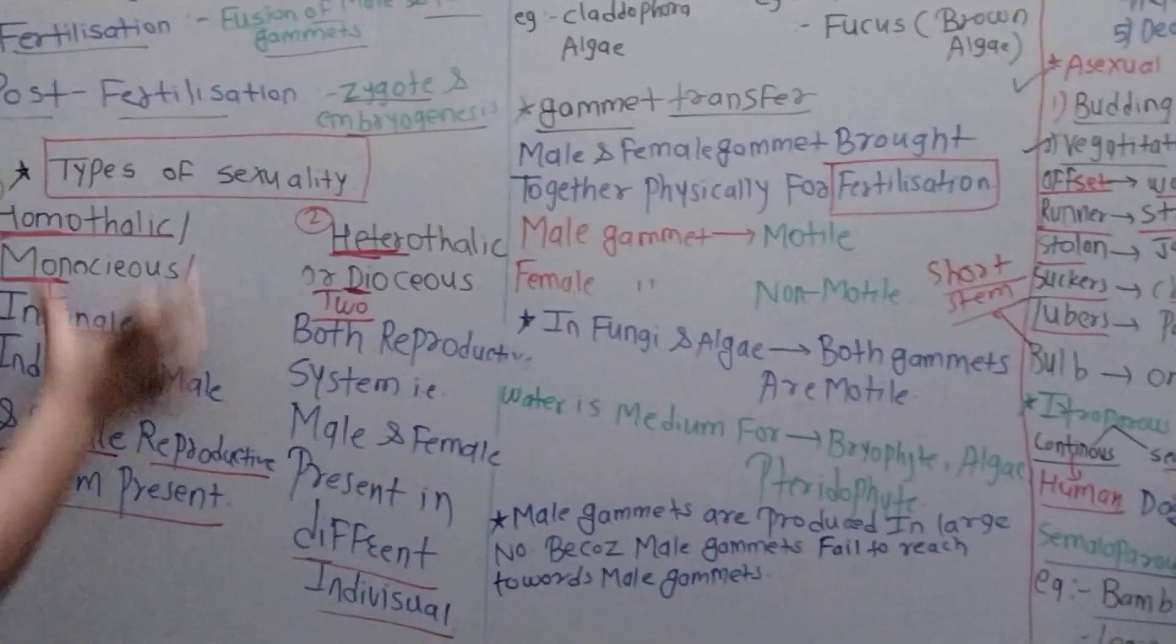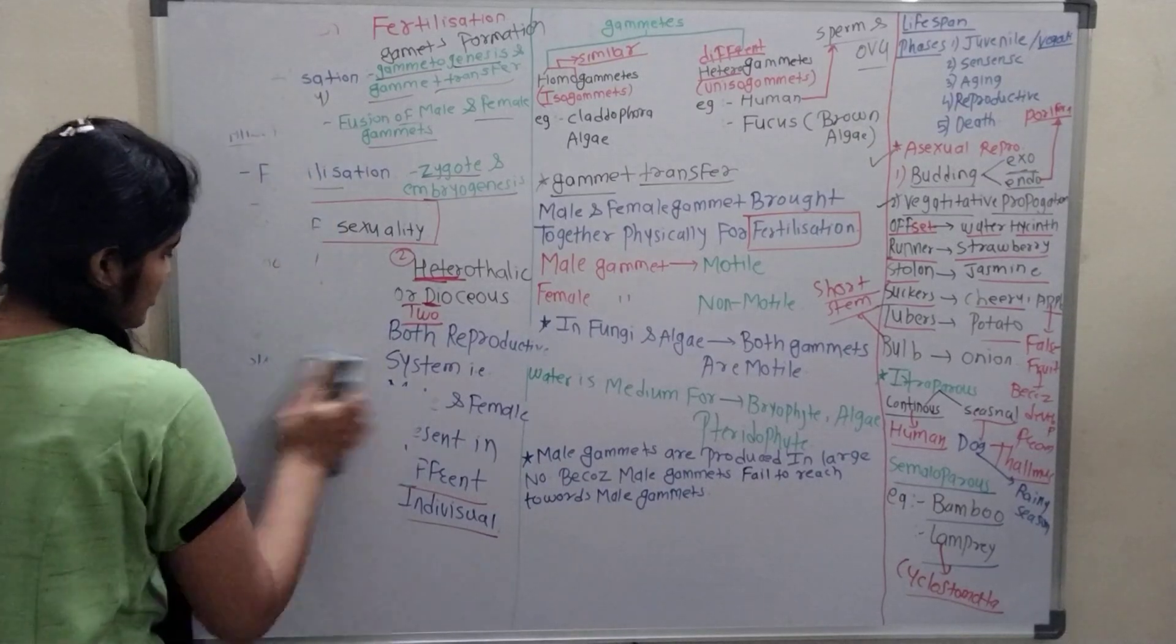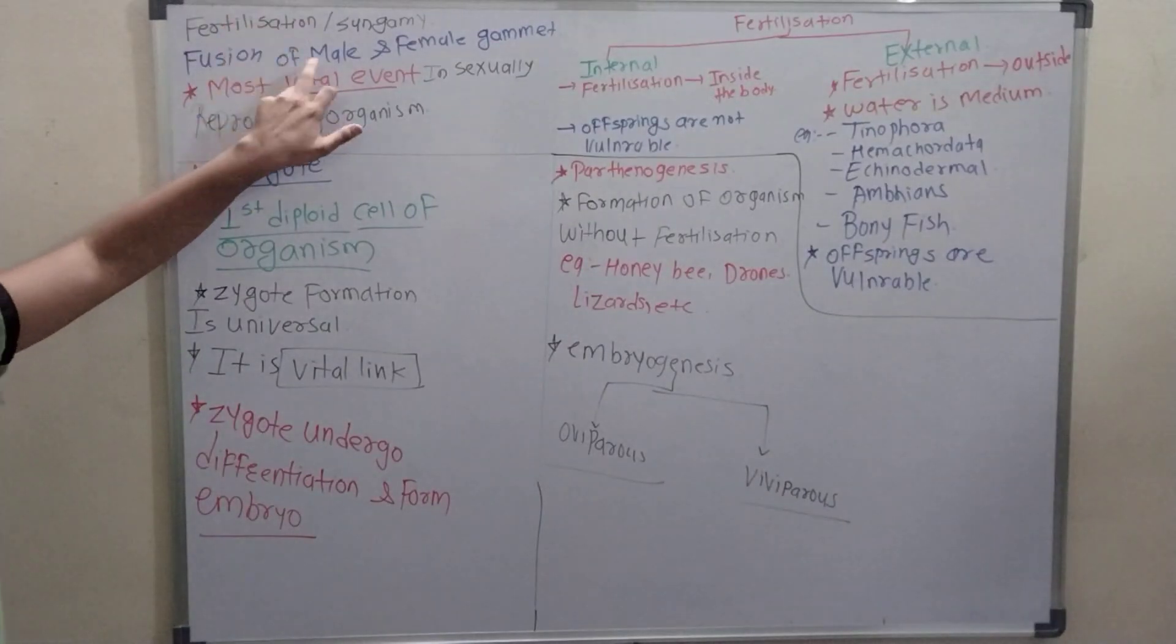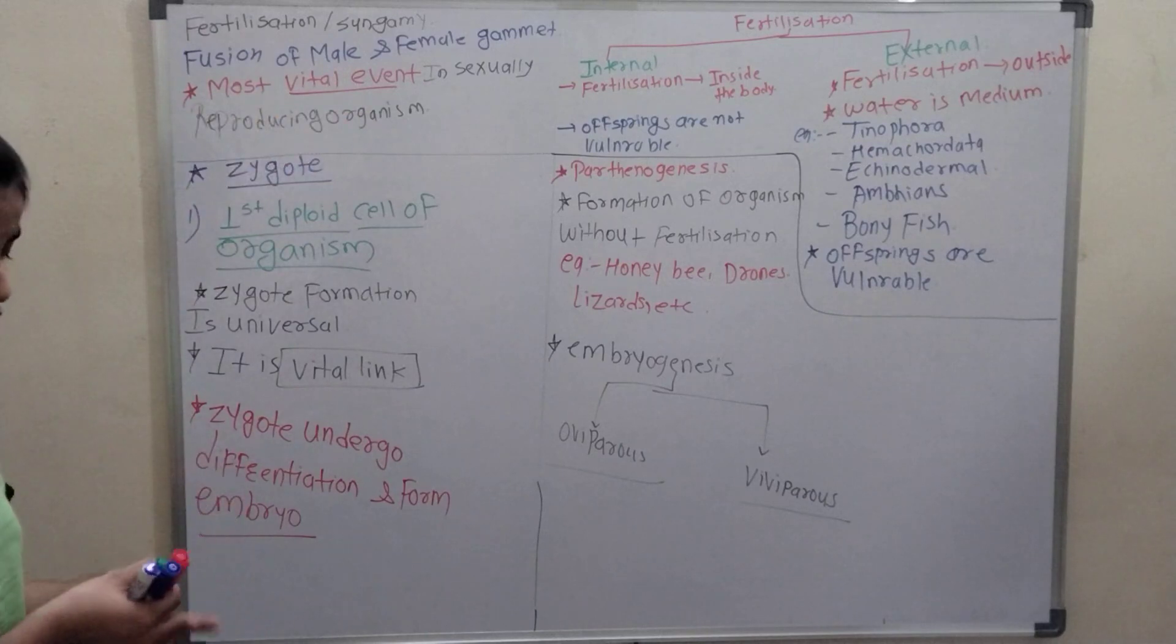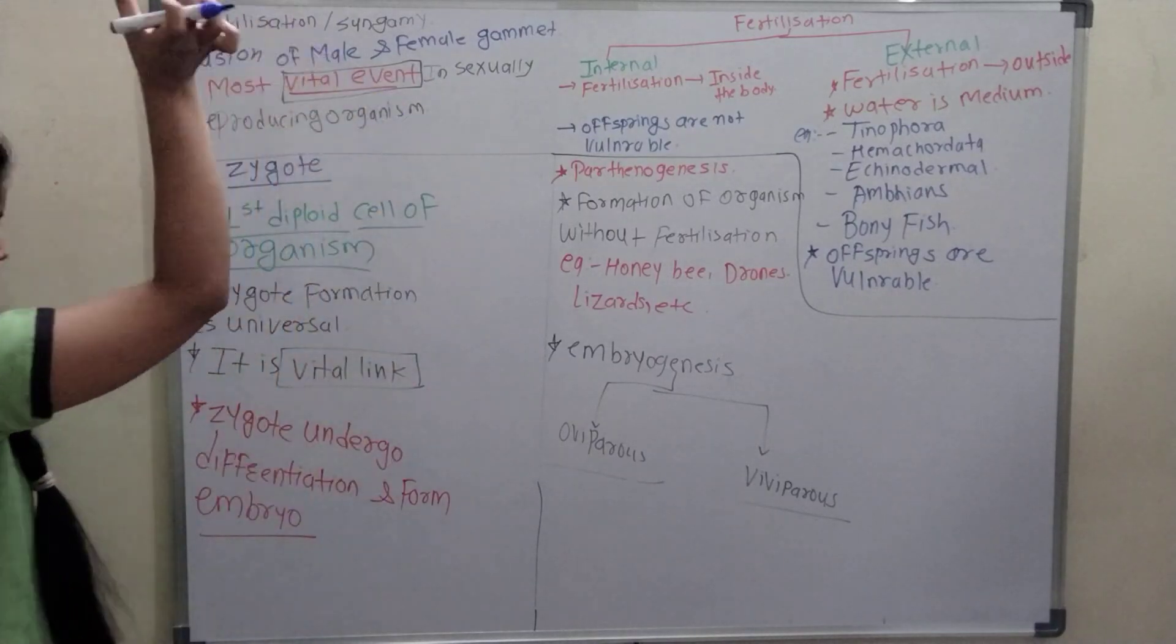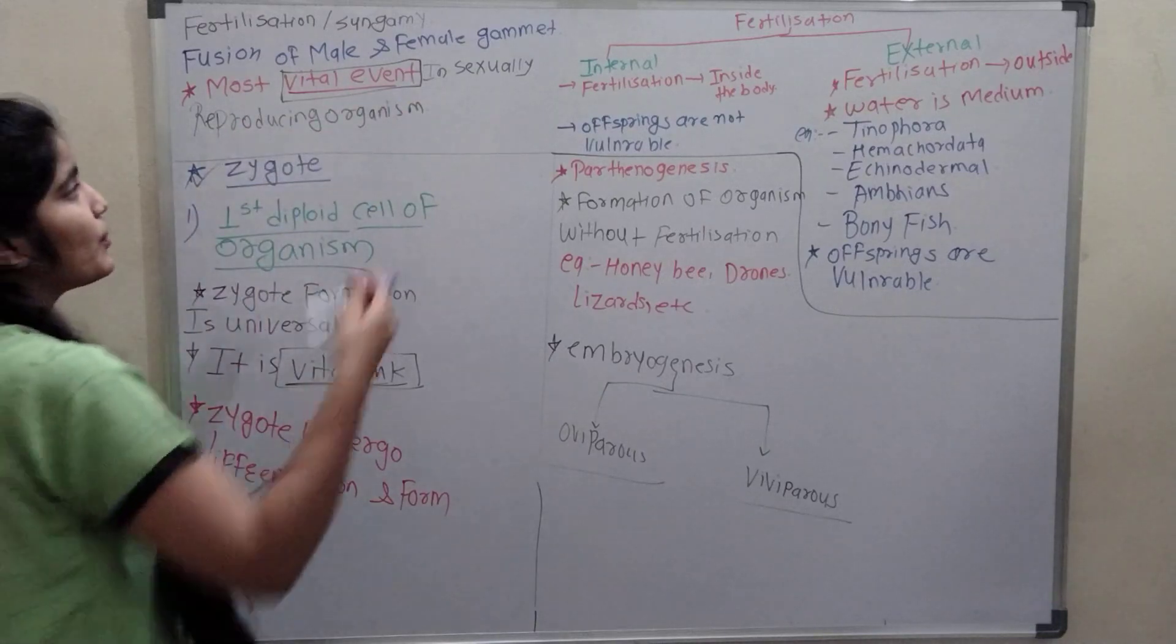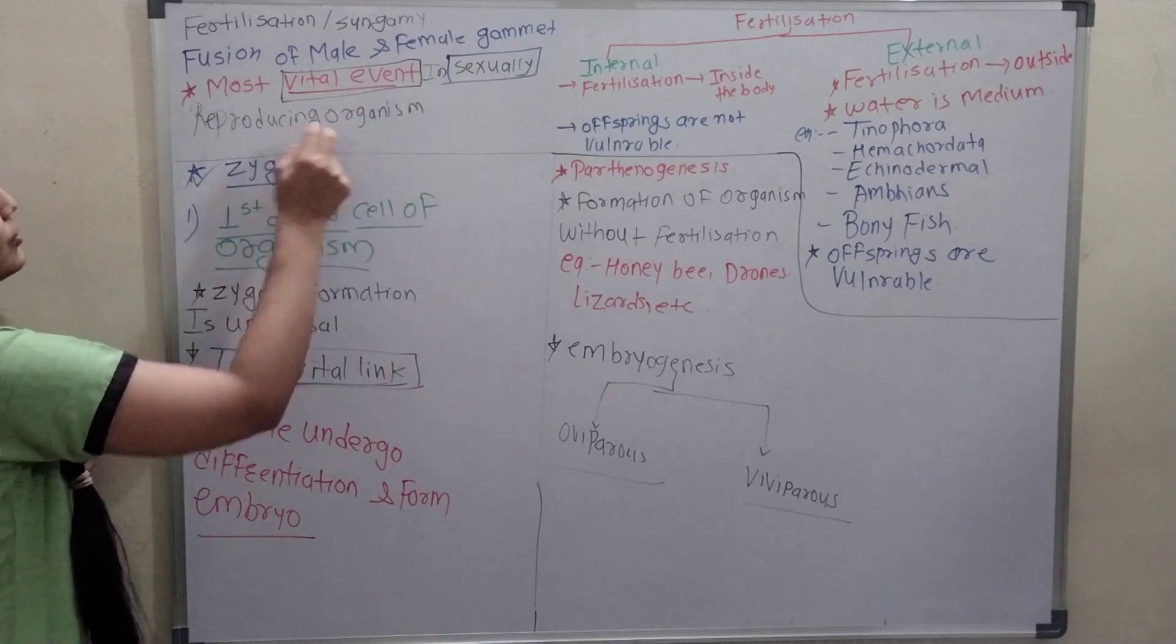Next are post-fertilization changes. Fertilization means fusion of male and female gametes. This is the most vital event. Vital event is a very important word. In case of MCQ, vital event is written. Vital event means fertilization. And in case of zygote, vital link is written. Both are very important words. Most vital event in sexually reproducing organism. Sexual reproduction means bi-parental, where both parents, male and female gametes, take part in that reproduction.